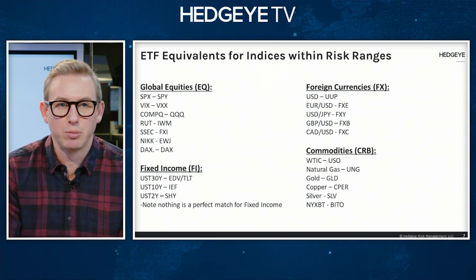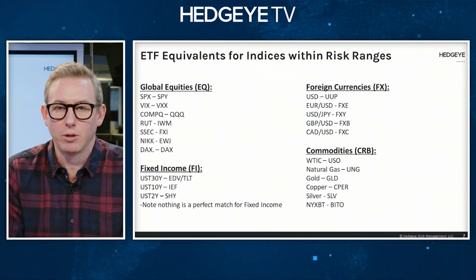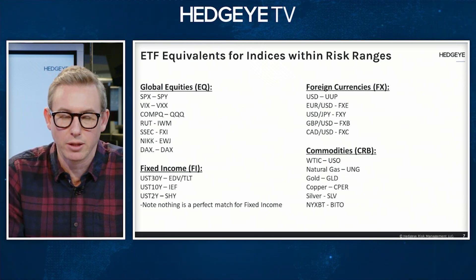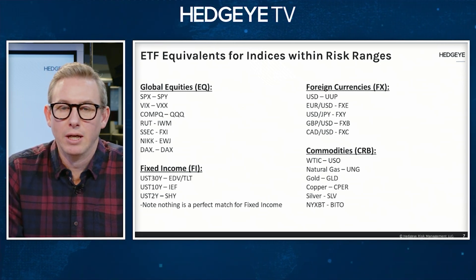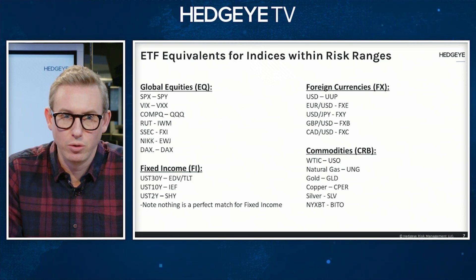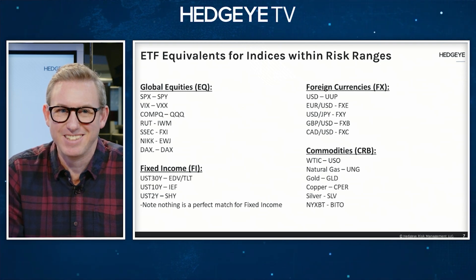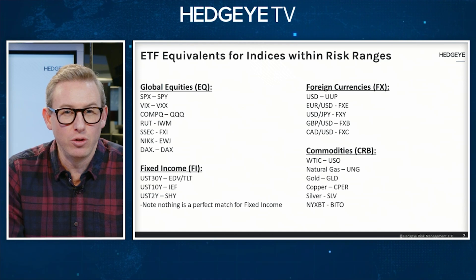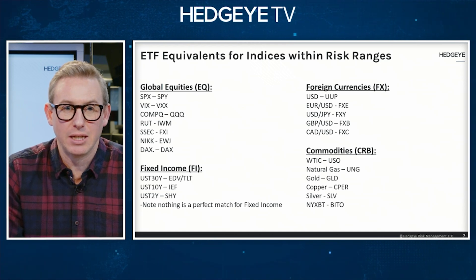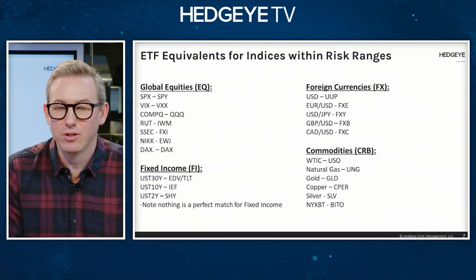Next we've got the fixed income component. Please note: nothing truly perfectly matches the fixed income exposures within the risk range product, which would be the US Treasury 30-year, 10-year, and 2-year. High yield does match, because that is indeed the ETF — that would be HYG. For the 30-year, you could use something like EDV or TLT; TLT is 20-plus years, so not quite the 30-year.